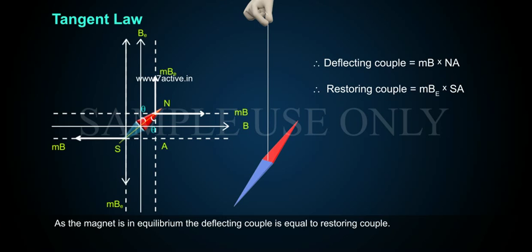As the magnet is in equilibrium, the deflecting couple is equal to restoring couple. Therefore, MB into NA equals MBE into SA.